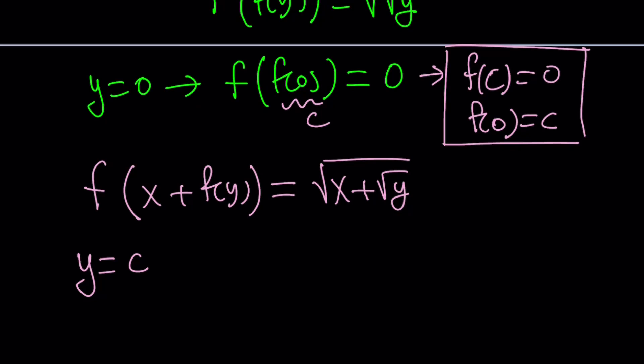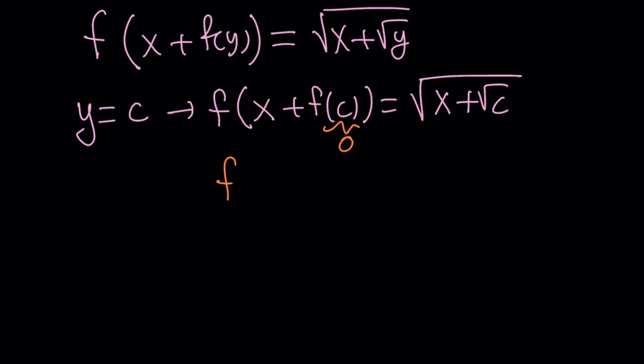So here's what I'm going to do next. I'm going to replace y with c. Why? Because I do know the value of the function at c. In other words, I have the value of f of c. So if you do that, you're going to get f of x. By the way, I'm not replacing x with anything. So this is going to be f of x plus f of c equals the square root of x plus the square root of c. Easy, right? But look at this. What is f of c? It is 0. Awesome. Let's go ahead and replace it with 0. And guess what this gives us? It gives us f of x. Isn't that awesome?